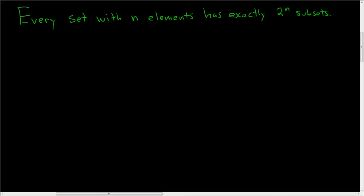Every set with n elements has exactly 2 to the n subsets. There are several ways to prove this, so this is just one way. Proof.